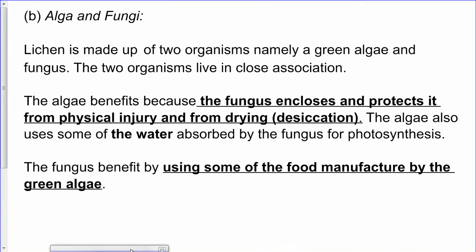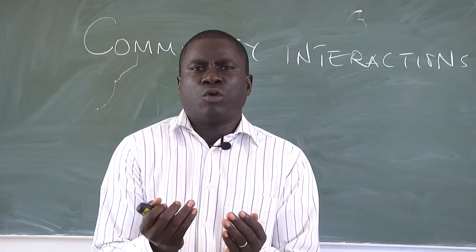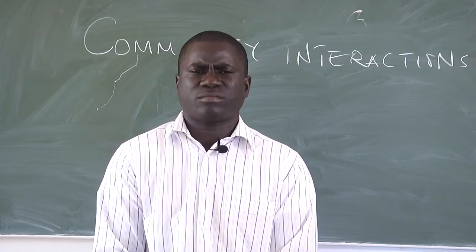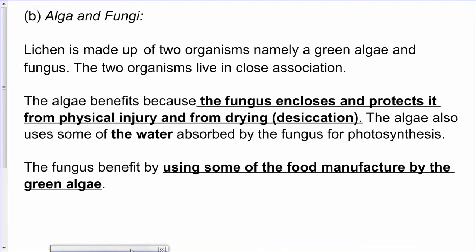Another example of a mutualistic relationship: lichen, which is made up of two organisms — green alga and fungus. The green alga benefits from the fungus because it encloses and protects the alga from physical injury and dryness. When the place is dry, the fungus protects the alga. And the alga also provides water for the fungus, while the fungus benefits from the food manufactured by the algae.